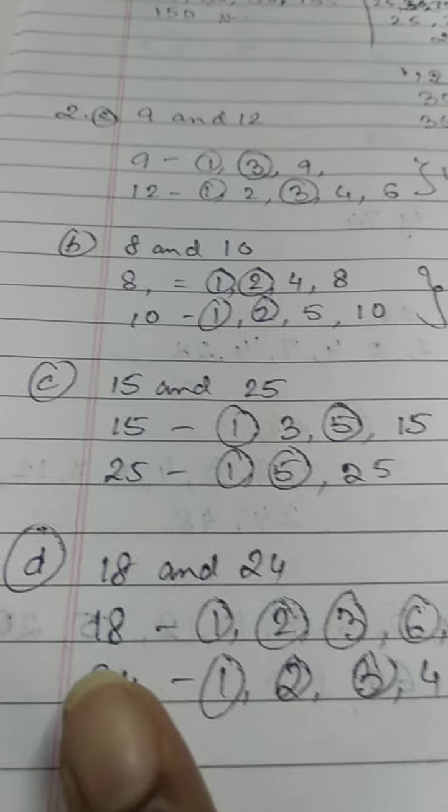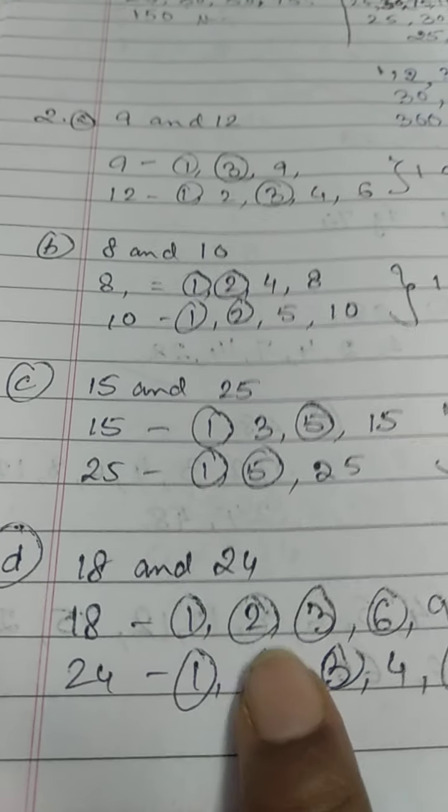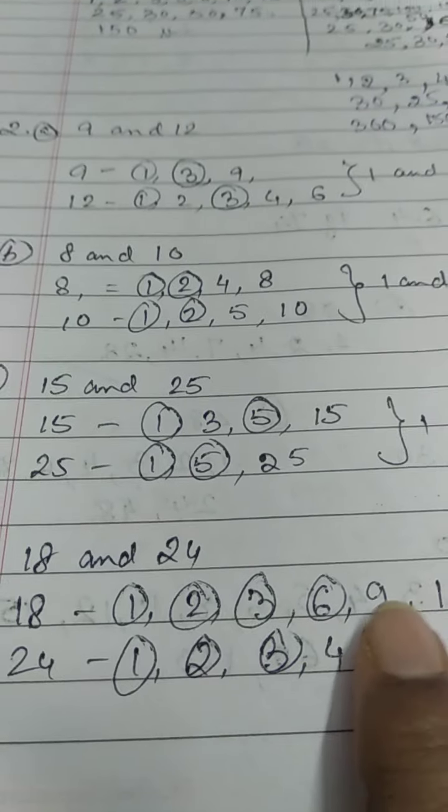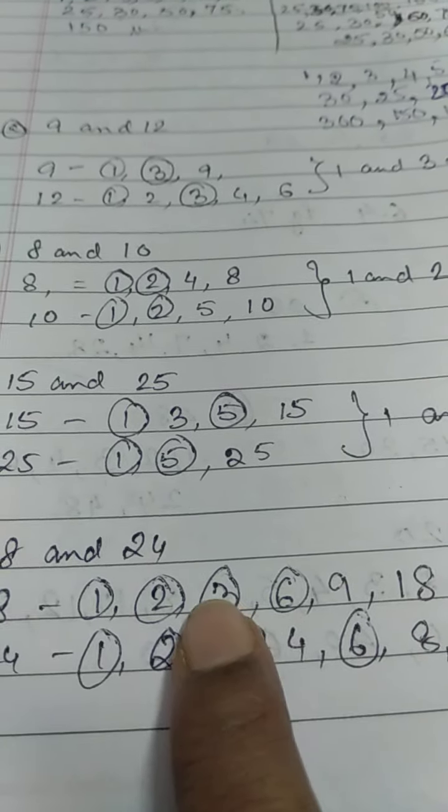18 and 24. For 18: one 18's are 18, nine 2's are 18, six 3's are 18. So factors are 1, 18, 2, 9, 3, and 6.